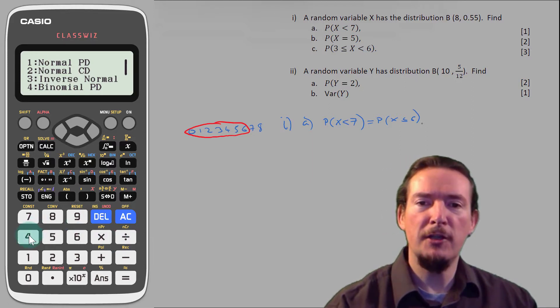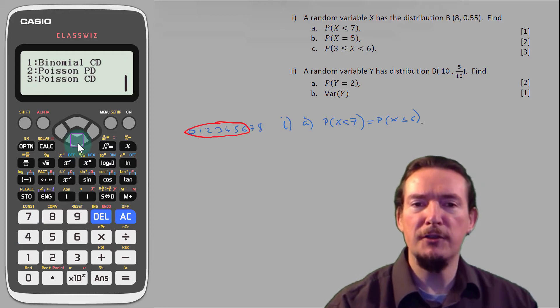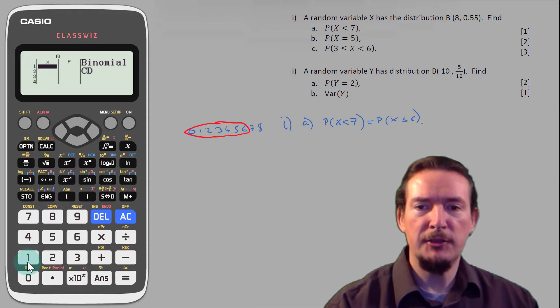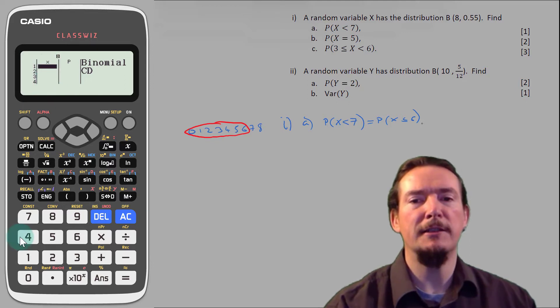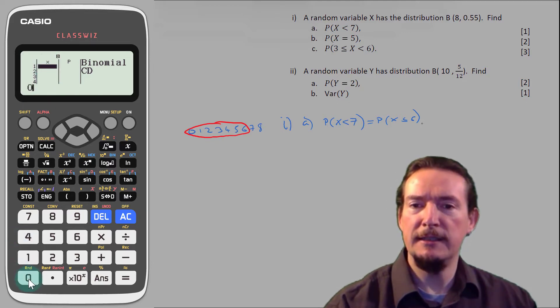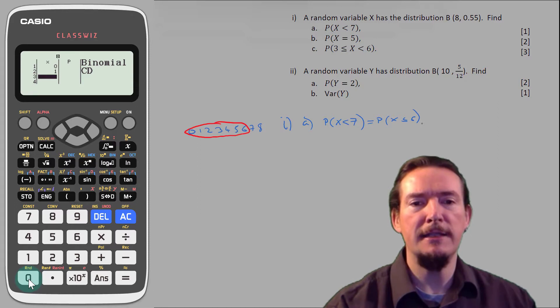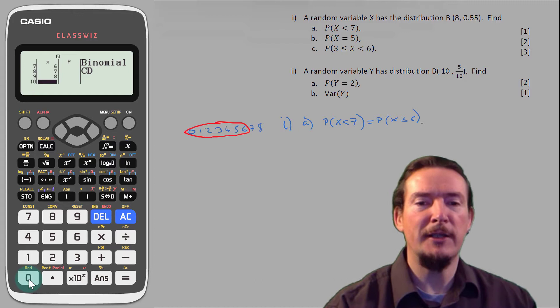So for this one, we are going to choose the binomial cumulative distribution. We have been asked to find quite a few different values, so let's choose the list option. First of all, I'm going to tap all the possible values that our random variable x can take, which in this case is the numbers 0 through 8. We won't actually need all these, but it's quicker to type them all in than to actually think about what we do and don't need right now.